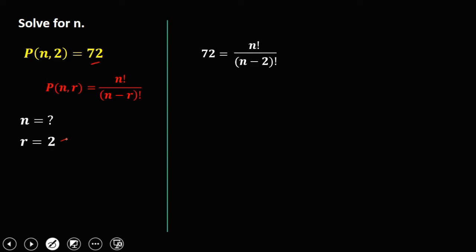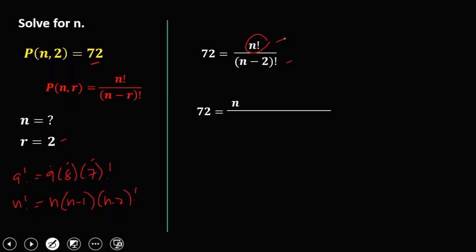We need to eliminate this n minus 2 factorial by rewriting n factorial. For example, 9 factorial equals 9 times 8 times 7 factorial, and so on. So if n equals 9, then n factorial is n times n minus 1 times n minus 2 factorial. Therefore, we can rewrite n factorial as n times n minus 1 times n minus 2 factorial, so we can eliminate the n minus 2 factorial.